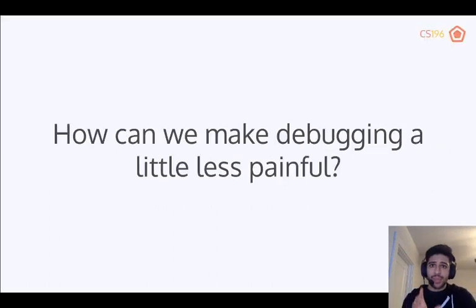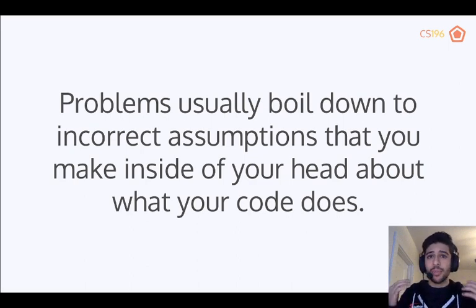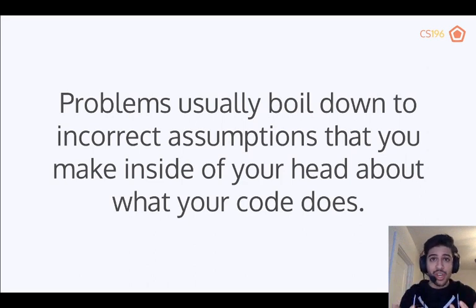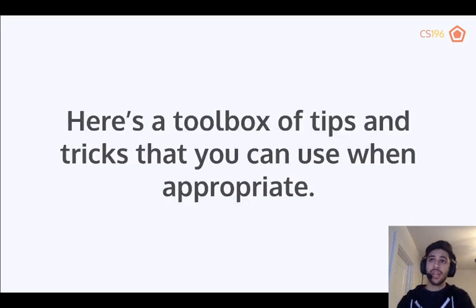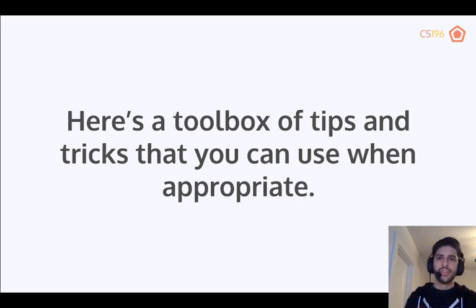How can we make debugging a little bit less painful? In general, problems usually boil down to incorrect assumptions that you have inside of your head about what your code does. That is really usually the reason why you have a lot of problems. If you have a bunch of these incorrect assumptions, you'll end up programming something and then realizing that a bunch of things don't do what you thought. The way to debug your code is by proving to yourself that certain things work. There is no straightforward algorithm to debugging any problem. What we can offer you is a toolbox — a little bit of a framework to tackle these issues.